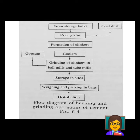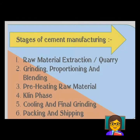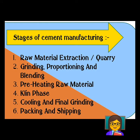The main six stages of cement manufacturing are: first, raw material extraction from the quarry, where rocks are blasted with dynamite and the resulting pieces are sent for grinding. Second, grinding and proportioning and blending — the correct amounts of limestone, clay, and sand are added in proper ratios and blended together.